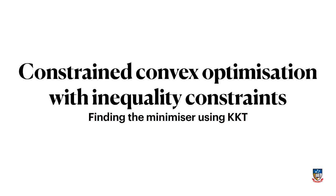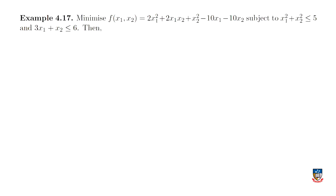Now that we have our KKT conditions and we've proved them, how do we actually use these things? Let's look at an actual example where we can use the KKT conditions to actually find the minimizer of a function.